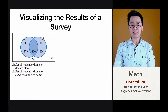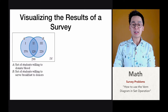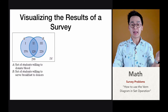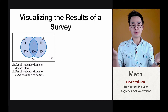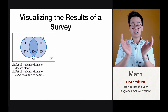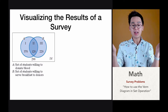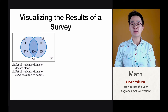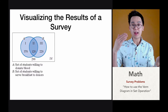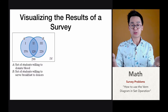In this particular union set, subset A would be the set of students willing to donate blood. And in set B, it will be the number of students who are willing to serve breakfast to donors. There's a second group in the middle, which is group number two, the intersection of A and B — those are the students willing to do both: donate blood and serve breakfast to donors.